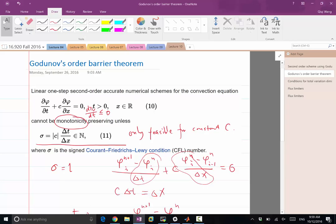So Godunov's order barrier theorem says that if you rely on the linear scheme for solving linear equations, then you cannot get more than first order accuracy if you also want to preserve the monotonicity of total variation.